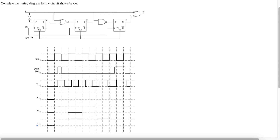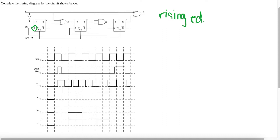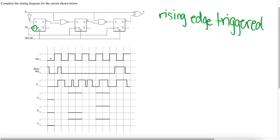The first thing we have to notice whenever we do a timing diagram circuit is we have to look at the clock edge. As you can see here, we have a little triangle, and what this triangle means is that this circuit is rising edge triggered. Now what does it mean to be rising edge triggered? It means that whenever the clock is at its rising edge — so when the clock is rising here, here, here — that's when we make changes in our X, A, B, and C.